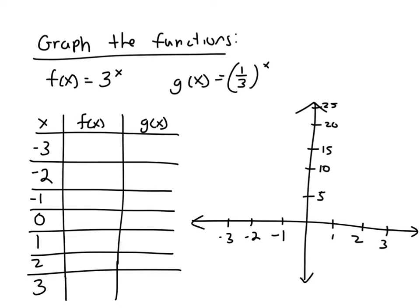So 3^(-3), remember that would be 1 over 3^3, which is 1/27. 3^(-2) would be 1 over 3^2, which is 1/9. And 3^(-1) would be 1 over 3^1, which is 1/3. Plug in 0, you get 1.